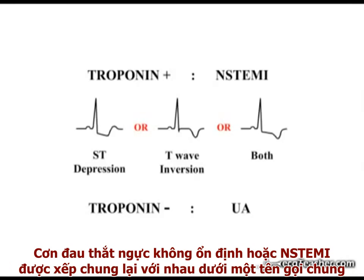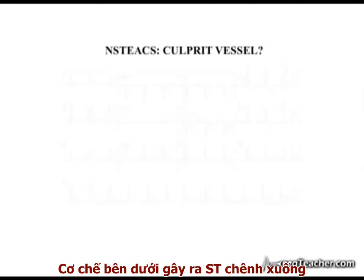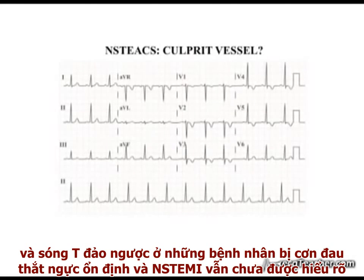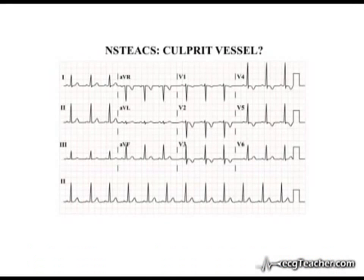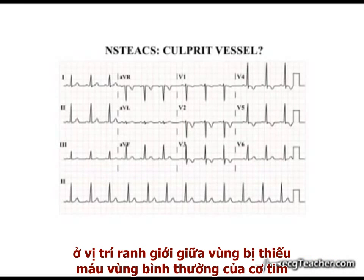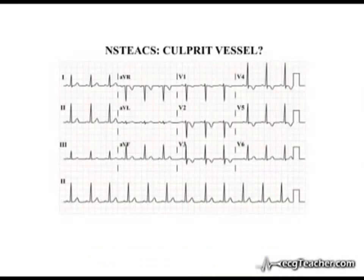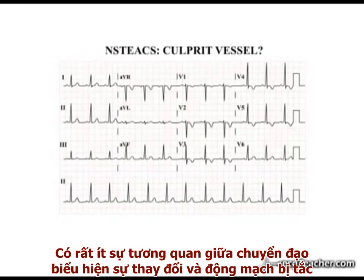Unstable angina and non-ST elevation MI are grouped together under the general term non-ST elevation acute coronary syndromes. The mechanism generating ST depression and T wave inversion in these patients is poorly understood. It may relate to abnormal electrical events at the margins between ischemic and adjacent normal regions of myocardium. For this reason, and in marked contrast to ST elevation MI, the distribution of ECG changes among the leads correlates poorly with the vessel obstructed.